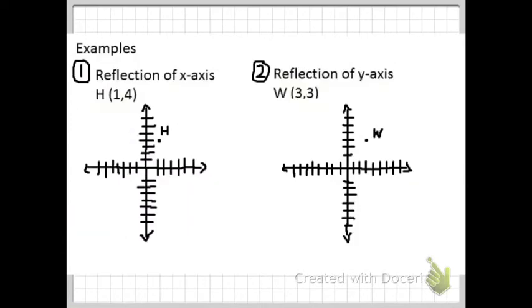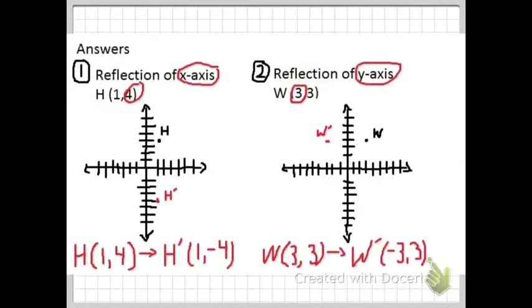Pause the video and try these examples — see if you get the right answer. The answer: reflection of the x-axis for point H, which is at (1, 4). The answer would be (1, negative 4) because it's the reflection of the x-axis and the 4 will become negative 4.